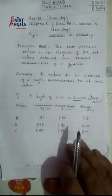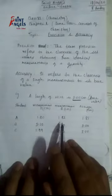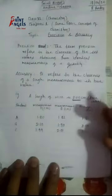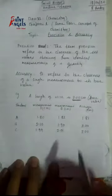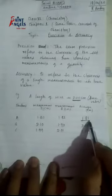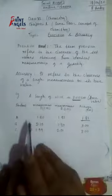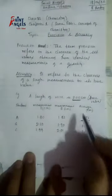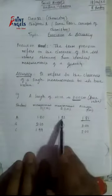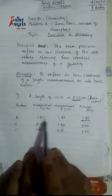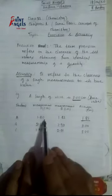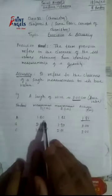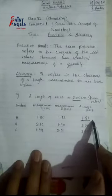तो अगर आप देखें, यह दोनों measurements काफी close हैं, लेकिन जो average value है वो true value से काफी difference रख रहा है — यह true value के करीब नहीं है, approach नहीं है। That means accuracy तो नहीं है। मतलब A जो student है, उसने जो measurement किया है वो accurate नहीं है — उसमें कोई भी accuracy नहीं है, क्योंकि true value से वो काफी difference रख रहा है। लेकिन दोनों measurements में उसका जो difference था वो बहुत ही कम है — दोनों काफी close हैं: 1.80 and 1.82। तो हम यह कह सकते हैं कि यह precise तो है, लेकिन accurate नहीं है। Means A जो है वो precise value है, but accuracy नहीं है उसके measurement में।